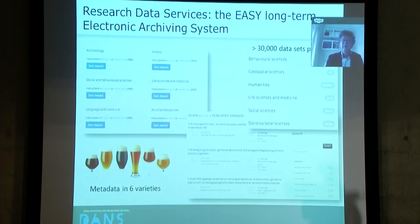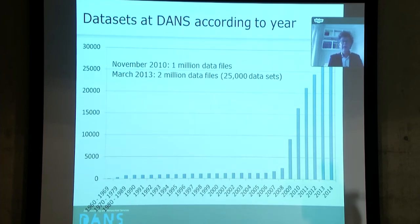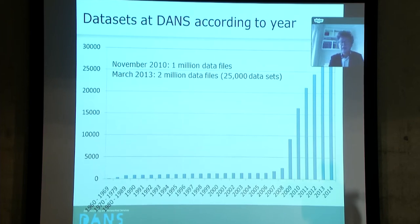The other areas are behavioral sciences, geospatial sciences, and life sciences and medicine, which is an upcoming domain that we are starting to serve. This graph gives an impression of the growth of the archive. There is really a slow start — I already told you that the roots of our data services go back to the 1960s — and until about 2008, that is the time that really the amount of data started to grow.